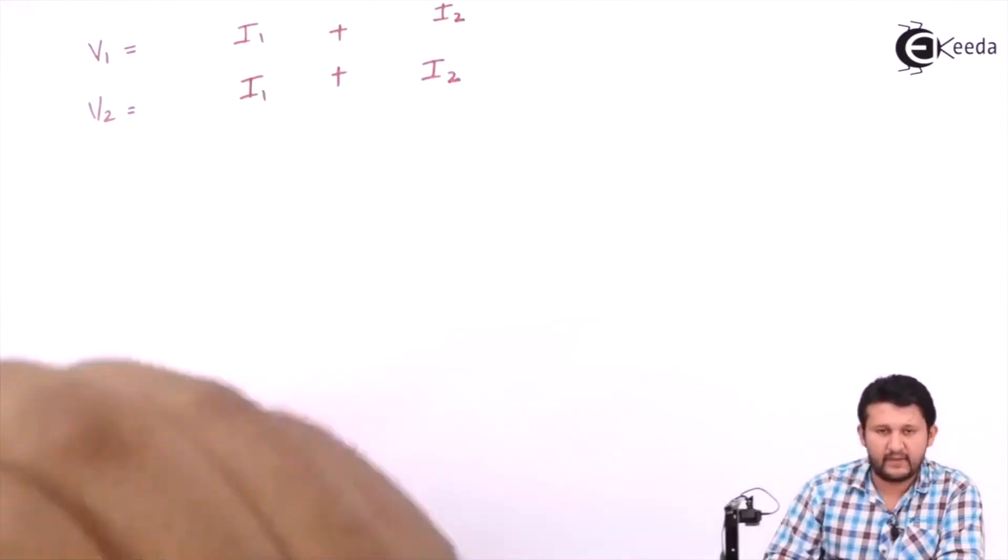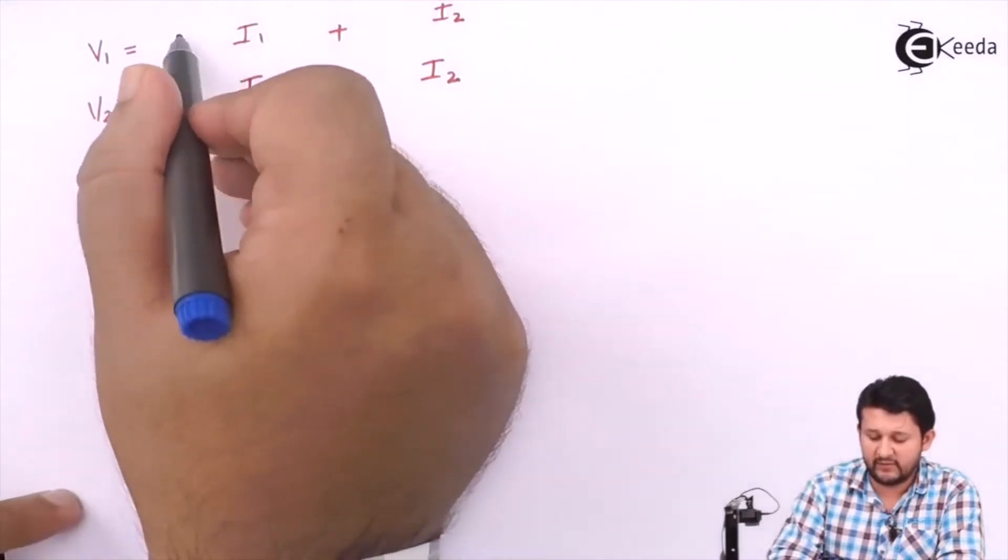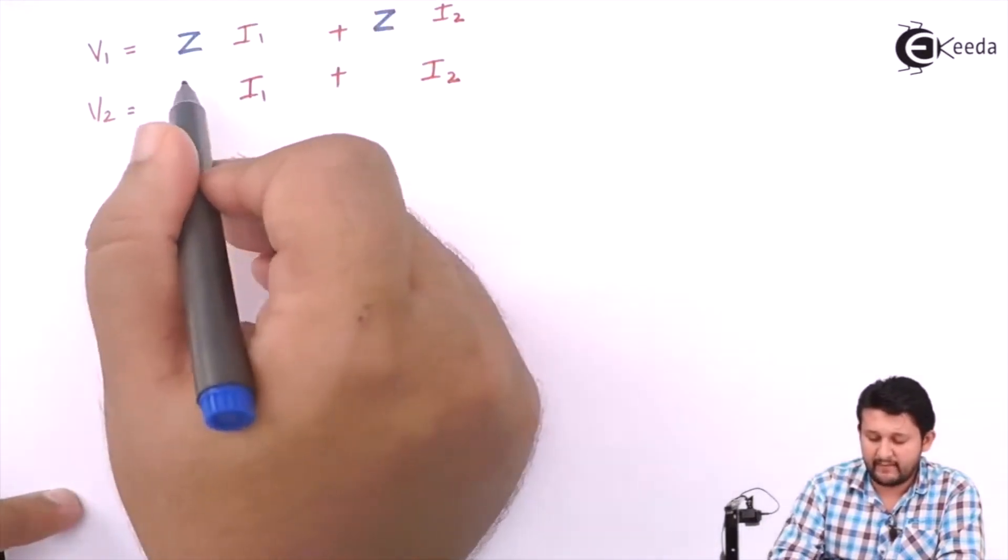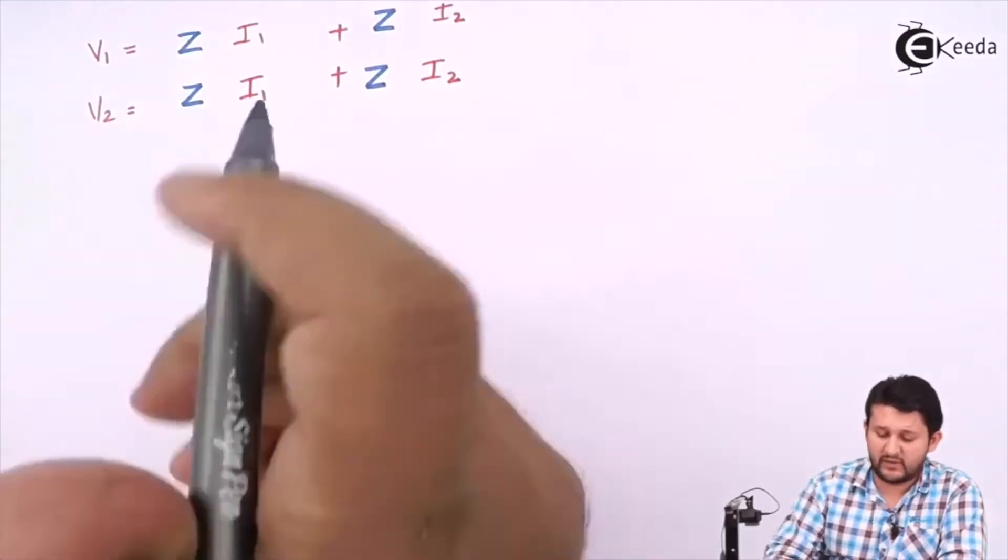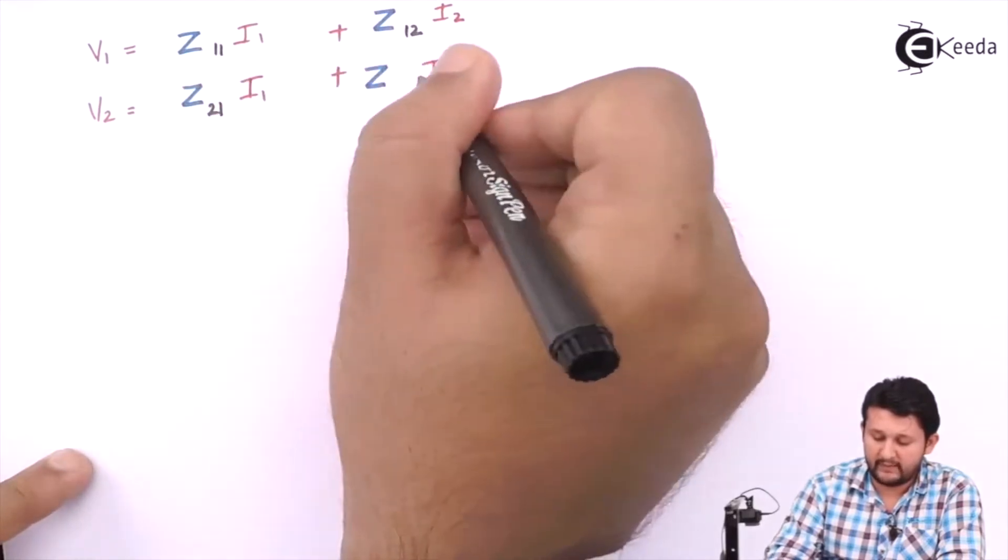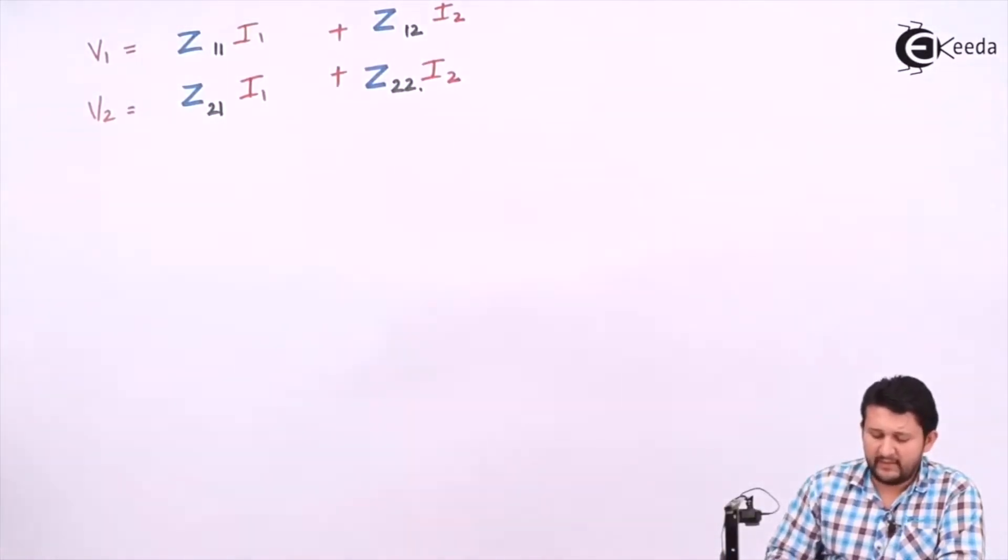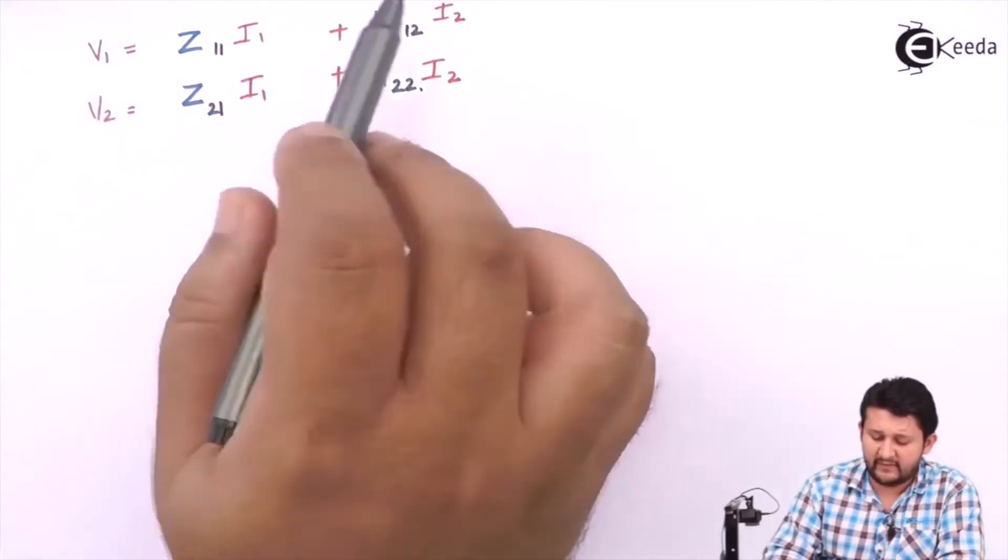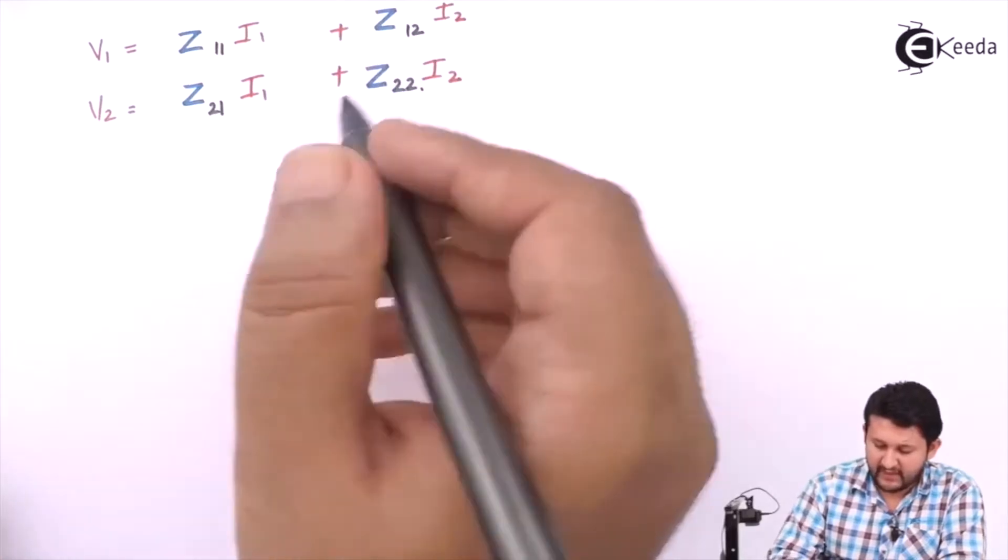It should be in terms of currents. V1 should be in terms of I1 and I2. V2 should be in terms of I1 and I2. Signs should be positive. Ultimately, if I need to find Z, there should be Z11, Z12, Z21, Z22. So that is a 2x2 matrix.